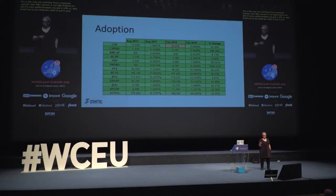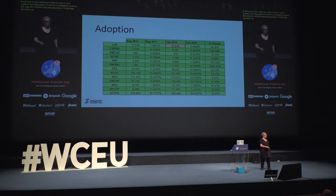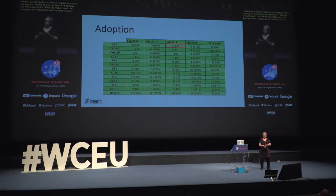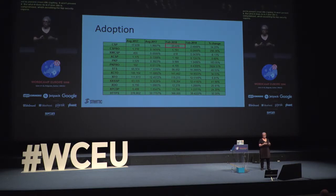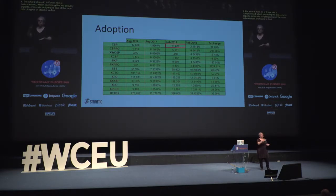In terms of adoption across the web for content security policies, as of February we were up to 2.4% of the top million sites. So if you're not using content security policies, you're definitely not alone. The point of using a content security policy is not to prevent cross-site scripting — it won't prevent it. But what it does do is: if your site is compromised — and cross-site scripting is one of the most difficult types of attacks to prevent, deal with, and even sometimes know about — having a content security policy in place is an added level of protection that will protect your users even if you've been compromised.